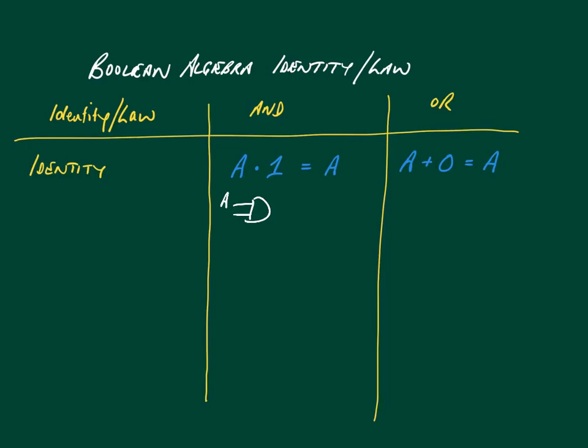To explain how this works, think of it as a logic gate. The first input is a, and the second input is 1. If a is 1, then 1 AND 1 will output 1. If a is 0, then 0 AND 1 will output 0. So the result is whatever a is.